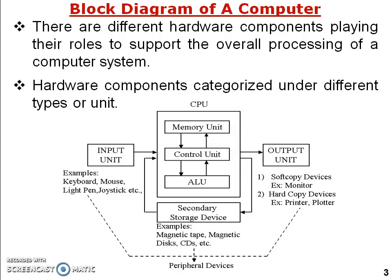Input units have different types of input devices such as keyboards, mouse, light pen, and joysticks. Output units have soft copy devices like the monitor — also known as the standard output device — and hard copy devices such as printers and plotters. Secondary storage devices include magnetic tape, magnetic disks, and CDs, which are also called optical memory. All input, secondary storage, and output unit devices are known as peripheral devices, helping the CPU produce useful output.